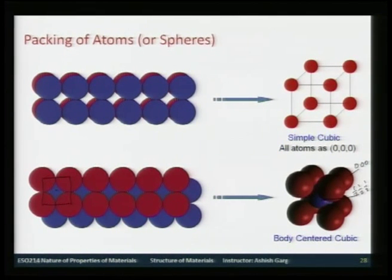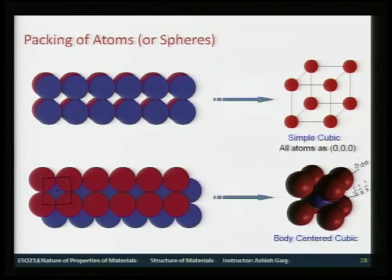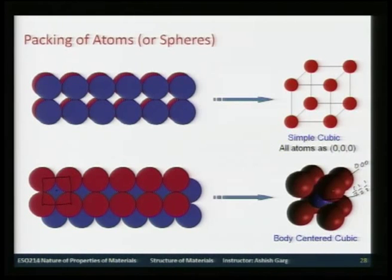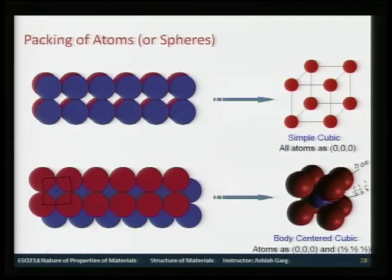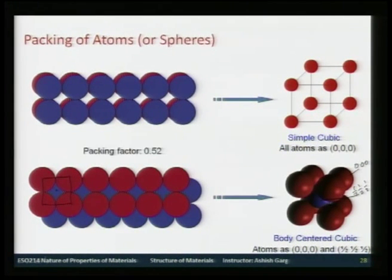The colors of the atoms are different only for illustration purposes; in a body-centered cubic structure both atoms are the same. If the colors were indeed different, it would be a primitive structure, as we will see in some ceramic structures. These are the atomic positions for the BCC structure.